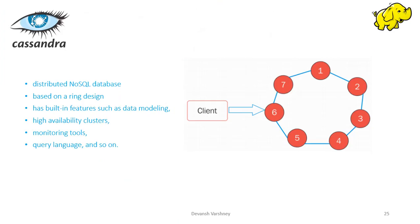Apache Cassandra's high availability and scalable architecture enables it to handle large amounts of data and thousands of concurrent users and operations spread across multiple data centers to ensure high performance. By distributing user traffic, Cassandra has built-in features such as data modeling, high availability clusters, monitoring tools, query languages, and so on.